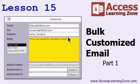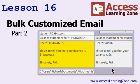Next, we will learn how to use recordsets to loop through the records of our database in VBA code. This will allow us to more easily send large batches of bulk email. We will create our own mail merge codes in our emails so you can customize them, and phrases like "Dear First Name" are replaced with "Dear Joe" when the email goes out.